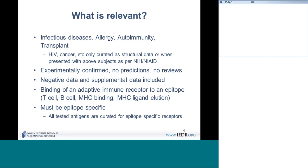All the data is experimentally confirmed — we do not capture epitope predictions. We do not enter data where it has been previously published and then republished; we don't enter it twice. We do capture both negative data and positive data. All the data goes in, even if it's in supplemental material.